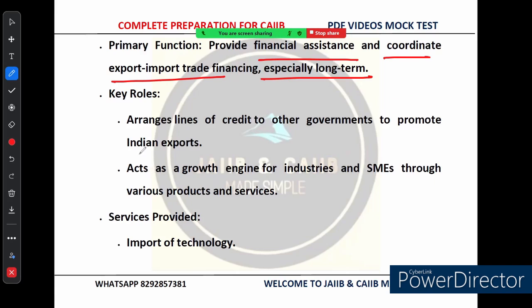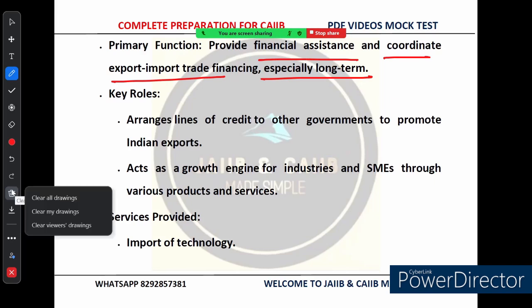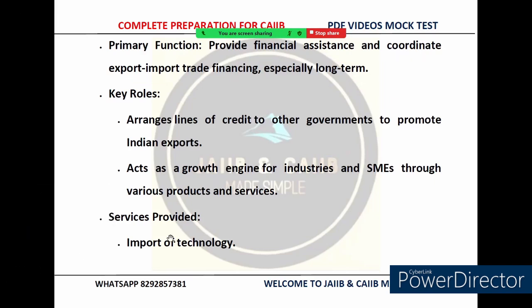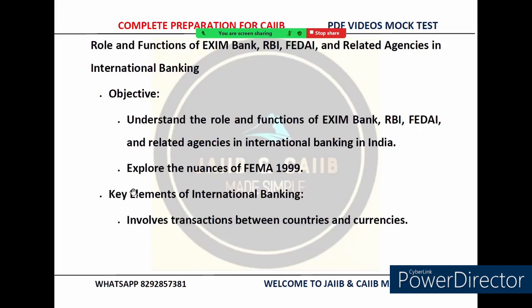RBI is the main regulator of international trade in India. Just like it controls domestic banking, it also supervises international banking. RBI oversees a law called FEMA — the Foreign Exchange Management Act, 1999 — which helps regulate the foreign exchange market and ensures that trade between India and other countries is done safely and legally. FEDAI, the Foreign Exchange Dealer Association of India, works closely with RBI and banks, setting the rules for foreign exchange transactions.